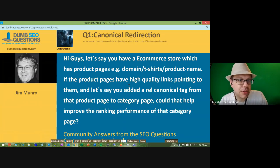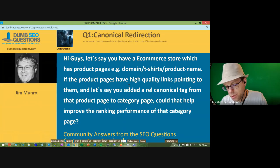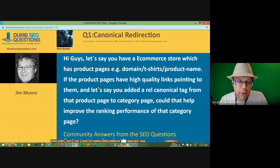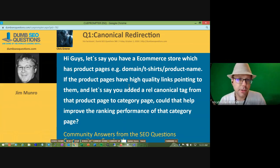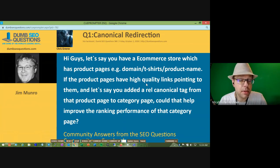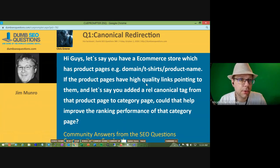Generally, if you're going to put a canonical tag pointing to another non-directly relevant page, it's not going to be that valuable. There are times where it does work, but it's also suggestive, which means Google has a right to ignore it. Generally, if you're going to collapse that page, you want to make sure that product goes to a similarly relevant product page instead.